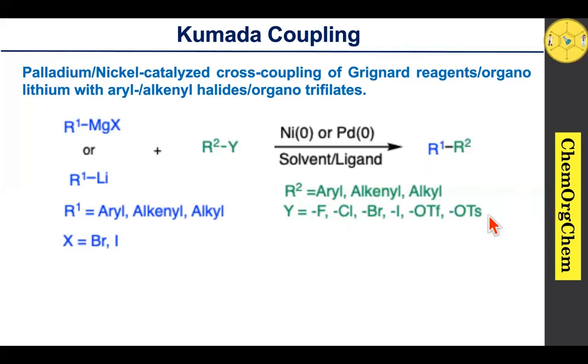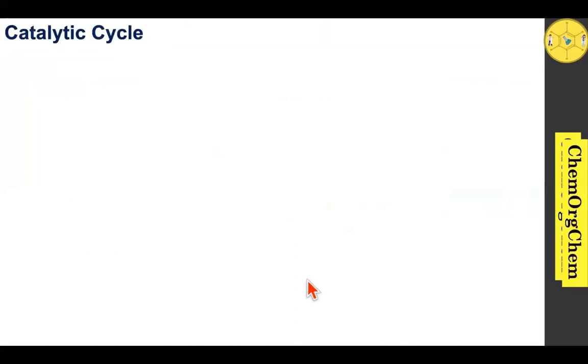In the case of palladium(0) catalysis, it can be used for coupling of either Grignard reagent or organolithium with either organotriflate, organotosylate, or organohalide to produce the corresponding carbon-carbon coupling product. This is one of the most important points in Kumada coupling. Let's see the catalytic cycle for each catalyst — nickel(0) or palladium(0) — starting with nickel(0).